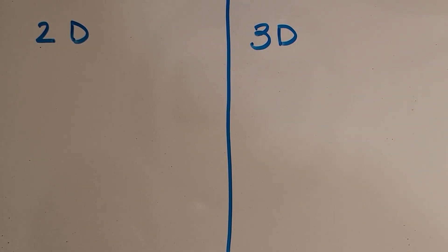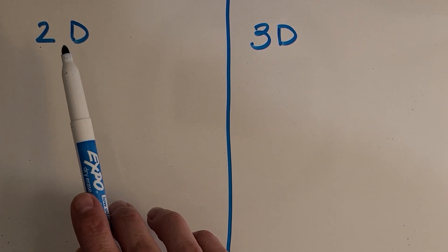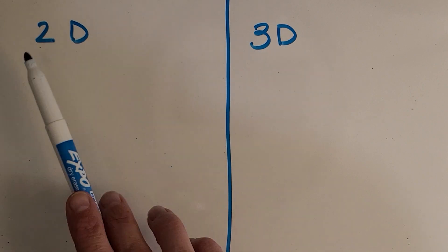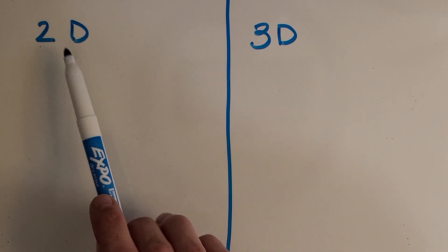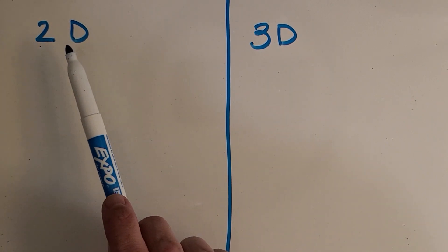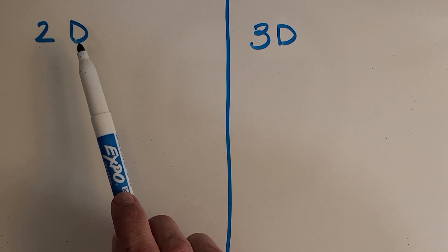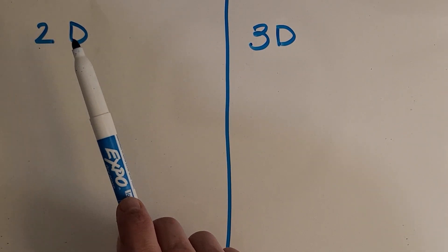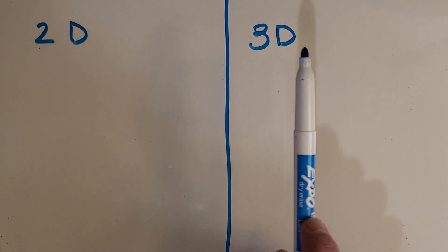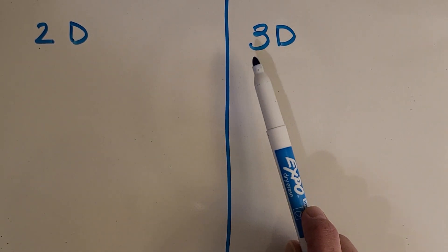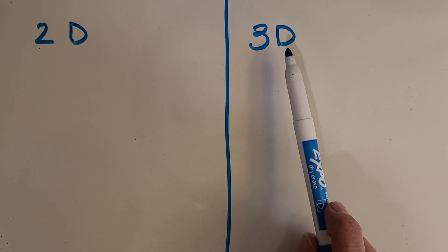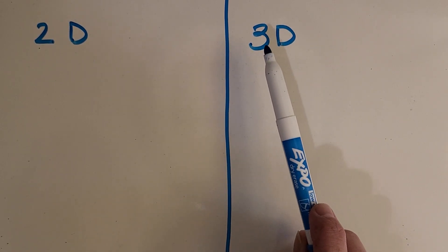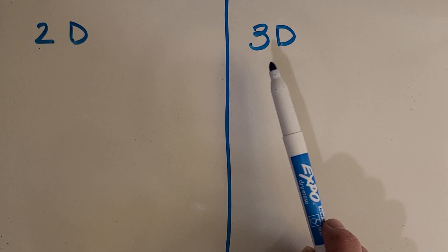Before we get into our scavenger hunt, we are going to study a little bit about different shapes. I've made two categories here: 2D, which stands for two-dimensional — those are flat shapes that just have a length and a width, just flat on paper. 3D, or three-dimensional, shapes have a length, a width, and a height, so they are like solid shapes.